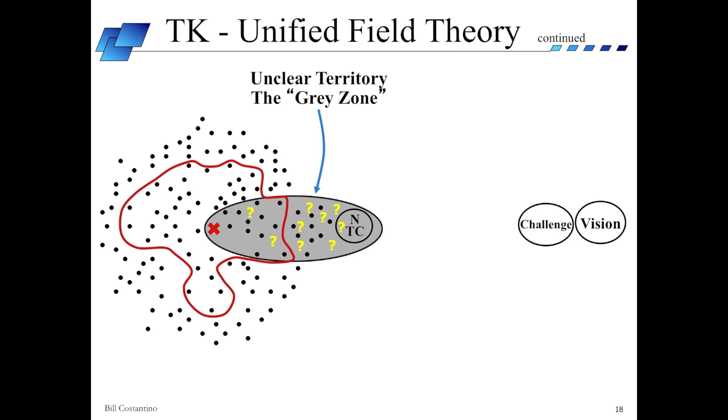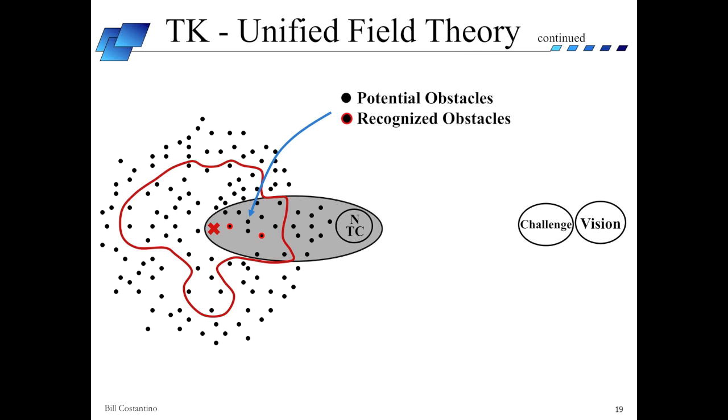Toyota Kata provides a methodical way, a consistent routine, for navigating through this gray zone, even in the face of ambiguity and uncertainty. As we set out in pursuit of our next target condition, there will be many potential obstacles, some of which we will immediately recognize. A key principle of the Toyota Kata methodology is that we do not need to resolve every imaginable obstacle. Instead, we're looking for the most direct path toward our next target condition. We only need to solve those obstacles that are preventing us from operating in a way consistent with the next target condition.